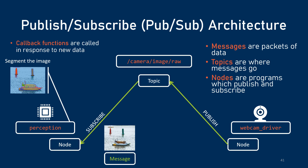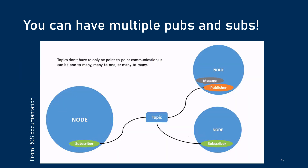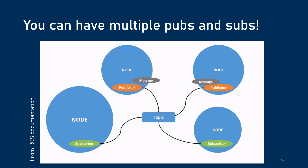To recap: topics are where messages go, like a YouTube channel collects videos. Nodes are programs which publish and subscribe, like a YouTube user. Messages are the packets of data that get sent, kind of like the videos themselves on YouTube. Callback functions are what are done in response to new data arriving via a subscription. And our example was one-to-one, but you can have multiple publishers and multiple subscribers — it's pretty common for multiple programs to listen to what's being published.